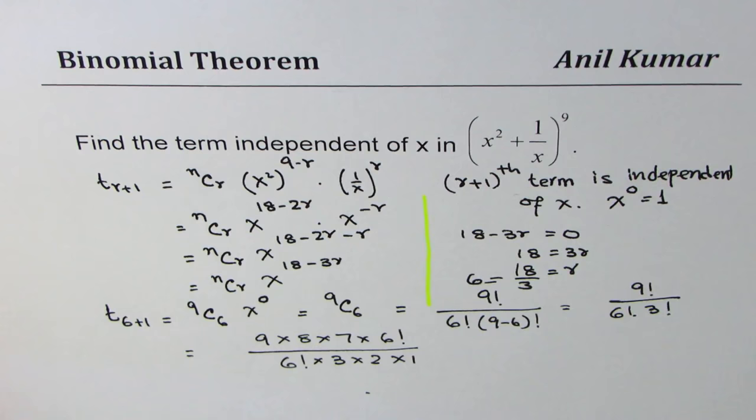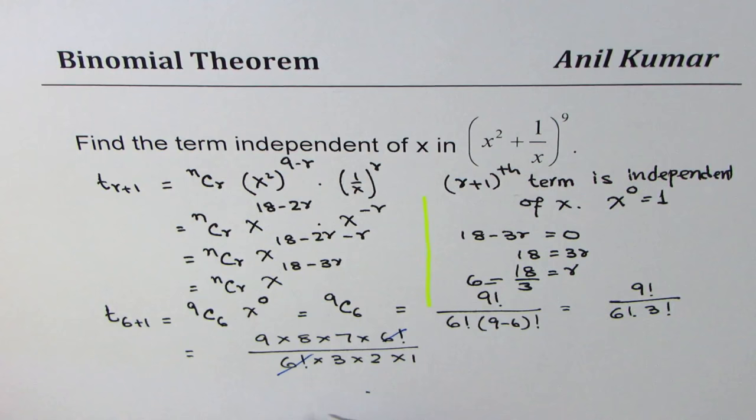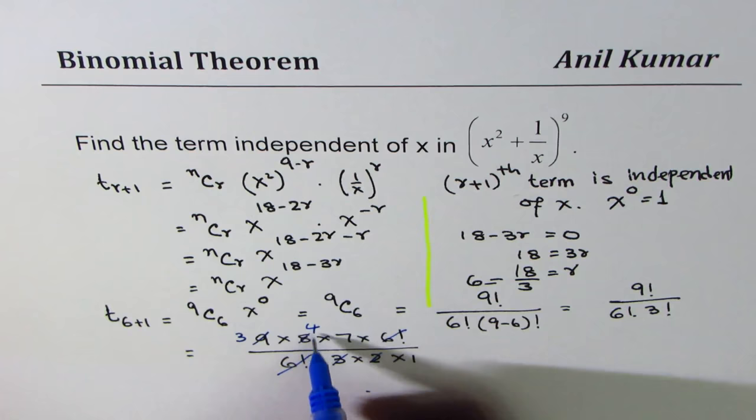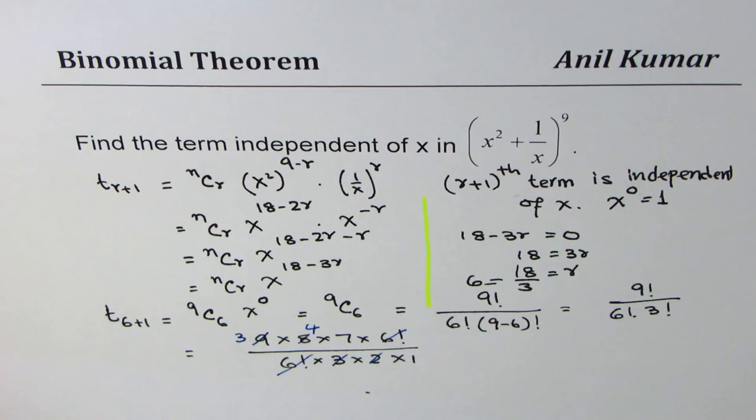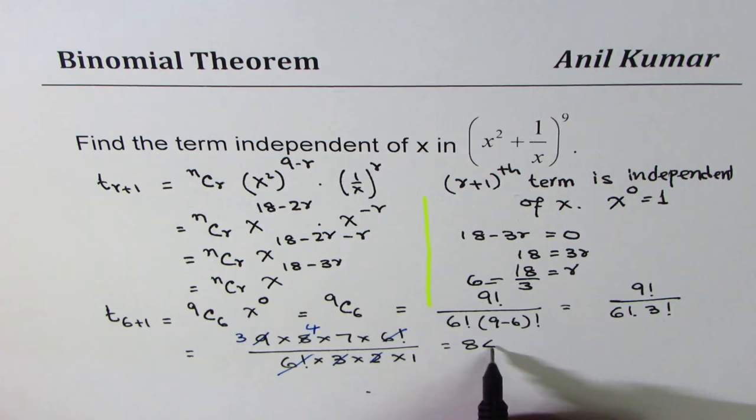Now, you can use a calculator to find this answer also. Anyway, let's simplify. 6 factorial cancels. 3 times 3 is 9. 2 times 4 is 8. So, we are left with 4 times 3 times 7. 4 times 3 is 12. 12 times 7 is 84.